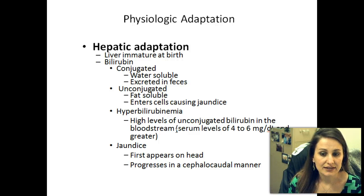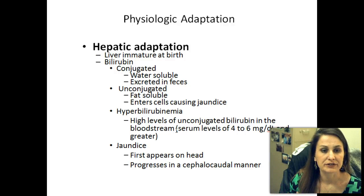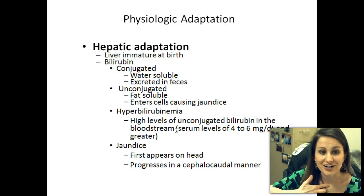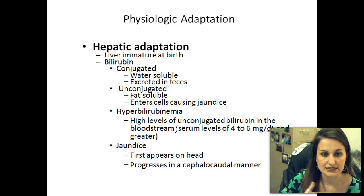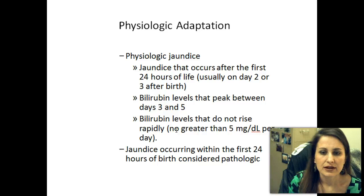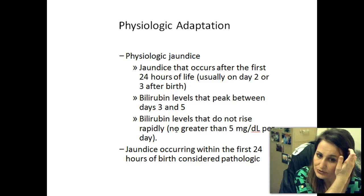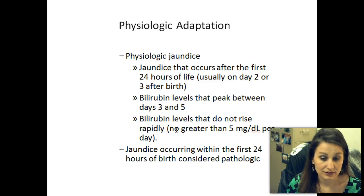Hyperbilirubinemia is high levels of unconjugated bilirubin in the bloodstream — serum levels of four to six and greater. Jaundice first appears on the head and it progresses down in a cephalocaudal manner. When looking at how jaundiced a baby is, we start at the forehead and press on bony prominences to see how far it travels down — you can see the jaundice more clearly on bones. Does it go to the chest? Does it go to the abdomen? Physiological jaundice usually occurs day two or day three after birth, with bilirubin levels peaking between days three and five, not rising rapidly — no greater than five milligrams per deciliter per day. Jaundice occurring within the first 24 hours of birth is considered pathological jaundice.